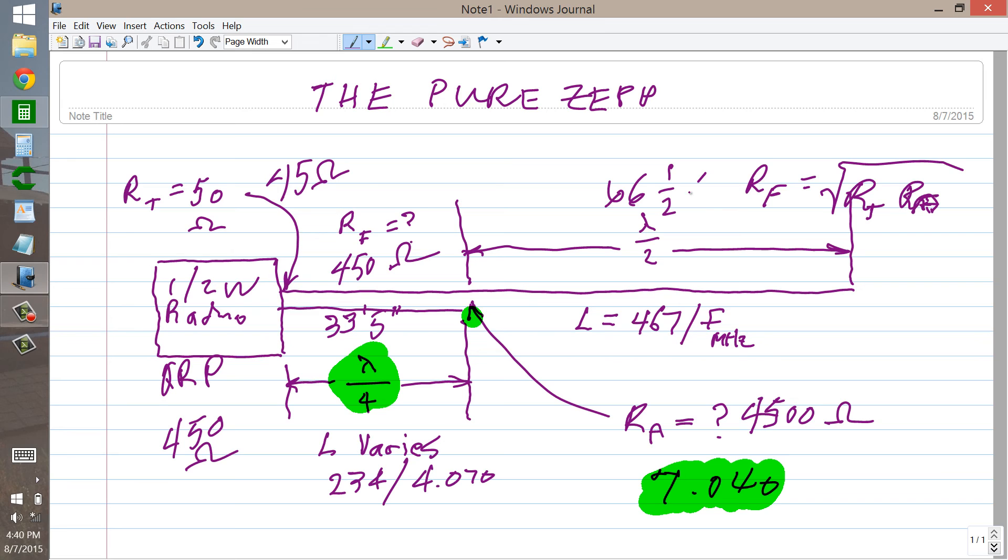So that's that. That's the basic particulars of this pure ZEP antenna design. As for general advice, the viewer has told me nothing about his available space, whether he can keep this all straight or not for this length, which is pretty close to 100 feet, and whether or not he has a way to get it up high enough.